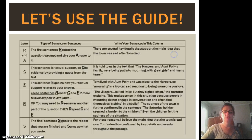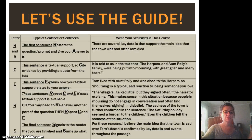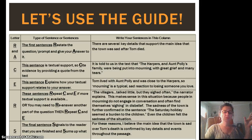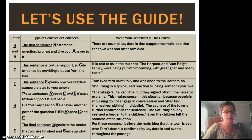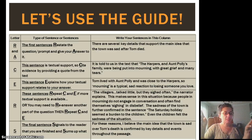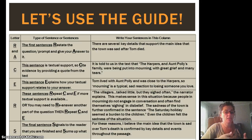Now let's translate that into the RACERS guide. When we translate that into RACERS, we take our first sentence and our answer and put them together. You can separate them into two sentences if you want. We would restate the question and answer it: 'There are several key details that support the main idea that the town was sad after Tom died.' Then C — we cite, that's textual support: 'It is told to us in the text that the Harpers and Aunt Polly's family were being put into mourning with grief and many tears.'